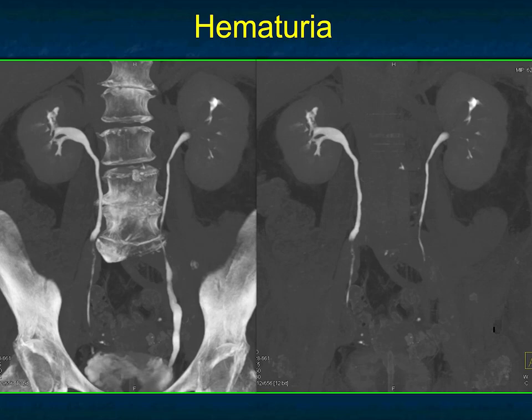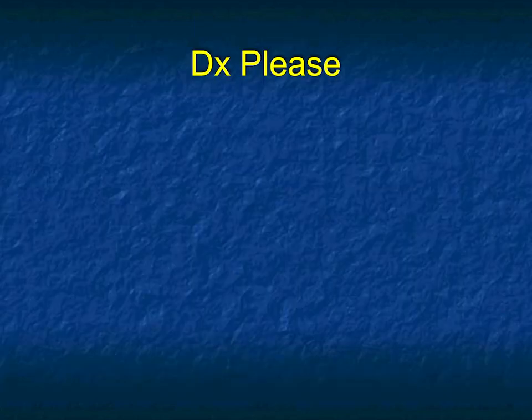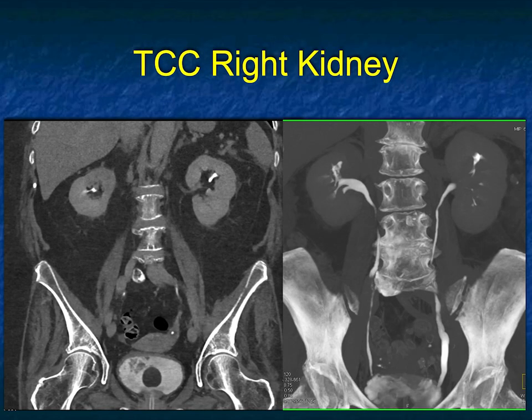Look at the upper pole calyces in the right kidney — you can see the calyces are distorted, irregular, and infiltrated. That's bad; that's the sign of a tumor. It's not a stricture like you would think about with tuberculosis. You've got to be thinking tumor, and when you see the calyces and maybe the pelvis involved, you've got to be thinking transitional cell carcinoma. The best answer here is a TCC of the upper pole right kidney.